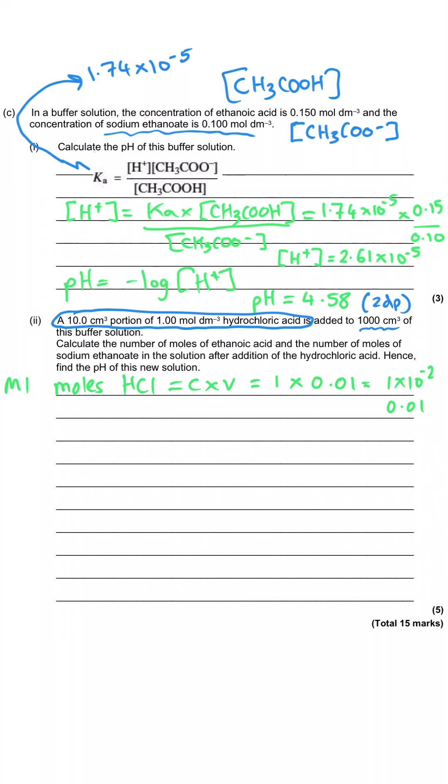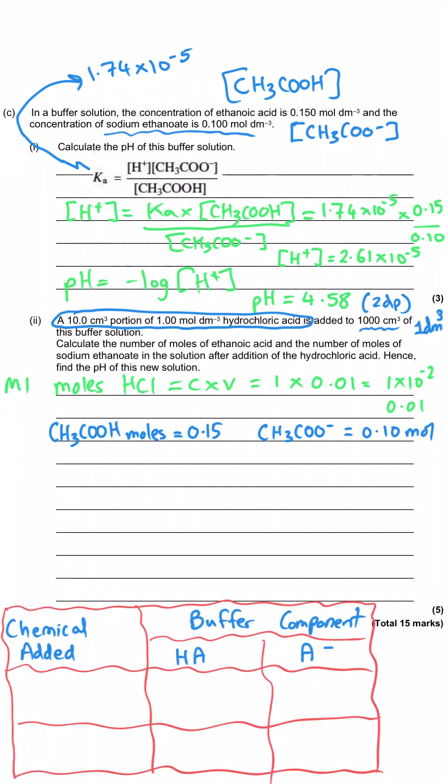Then we need to just dive a little bit deeper into the question. They've told us we've got a thousand centimeters cubed of the buffer solution or, more importantly, one cubic decimetre of that buffer. What that allows us to do, without them telling us that we're doing it, is that allows us to take these concentrations that we were told about earlier in the question and just take them as moles. Because if we've got a concentration of 0.15 moles per decimetre cubed and we've got one decimetre cubed of it, that will be 0.15 moles. And so we'll have 0.15 moles of ethanoic acid and we'll have 0.1 moles of sodium ethanoate.